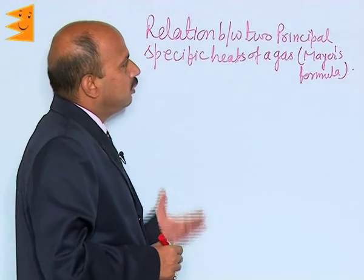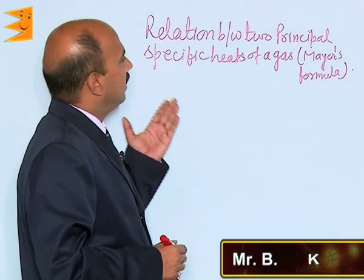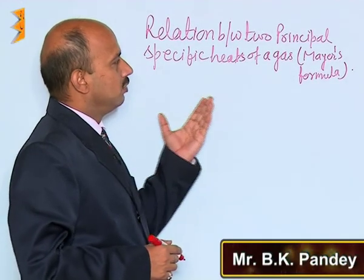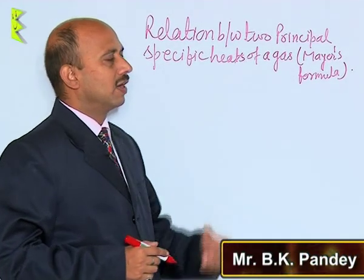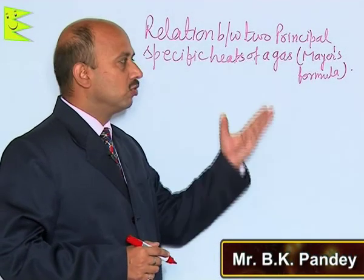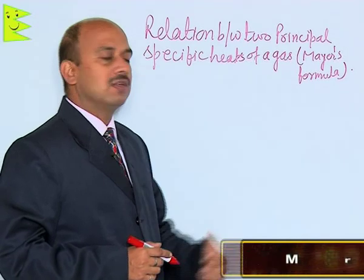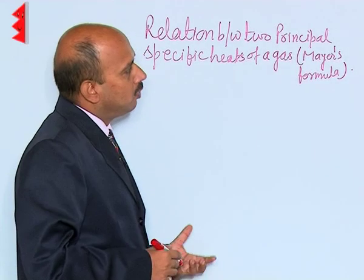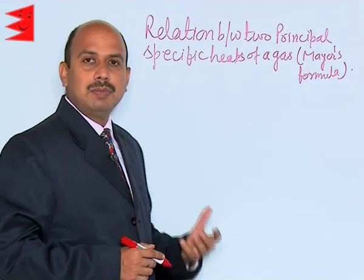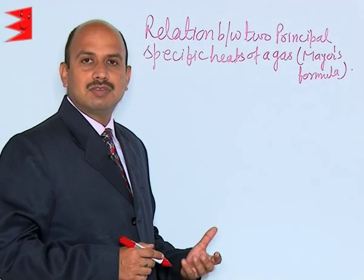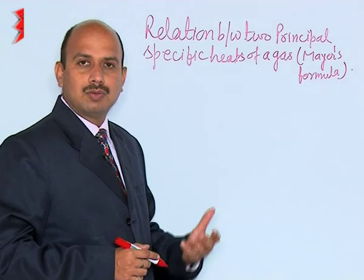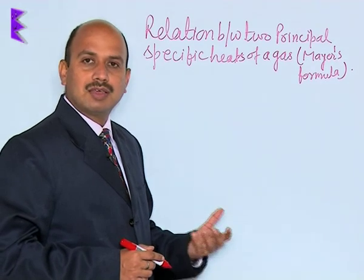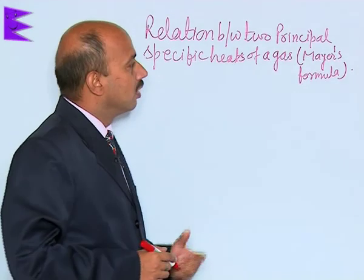Now, we will see a relation between two principal specific heats of a gas, also known as Mayer's formula. We have to derive here Cp minus Cv is equal to R, where R is the gas constant.